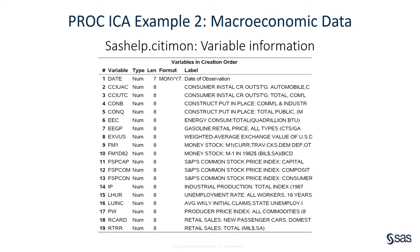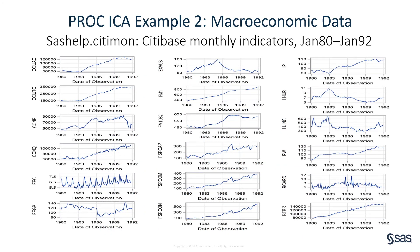This table displays variable information in the CITIMA dataset, which shows there are 19 variables. The first one is the date variable, which gives the date of observation. The remaining 18 variables are the monthly indicators, including energy consumption number, gasoline retail price, stock price indices, unemployment rate, produce price index, retail sales numbers, and so on. Each of the 18 monthly indicators is plotted as a time series plot. In each plot, the horizontal axis displays the date of observation, and the vertical axis displays the value of the monthly indicator.